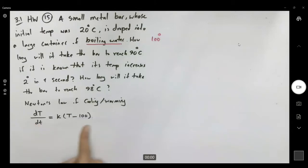So our goal is to solve this differential equation. We have dt over t minus 100, which equals to k dt. So if you take the integral of both sides, what do we have?